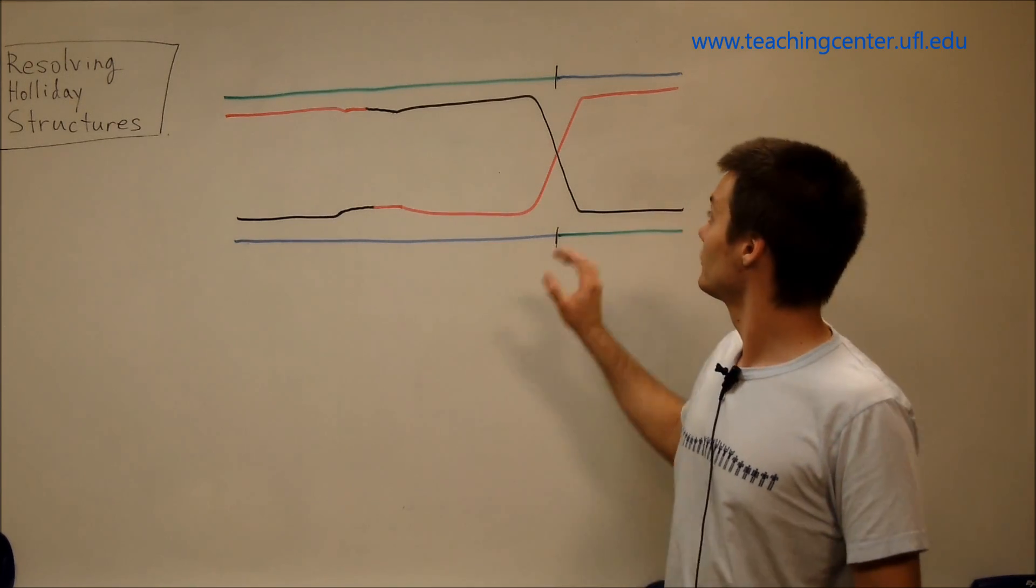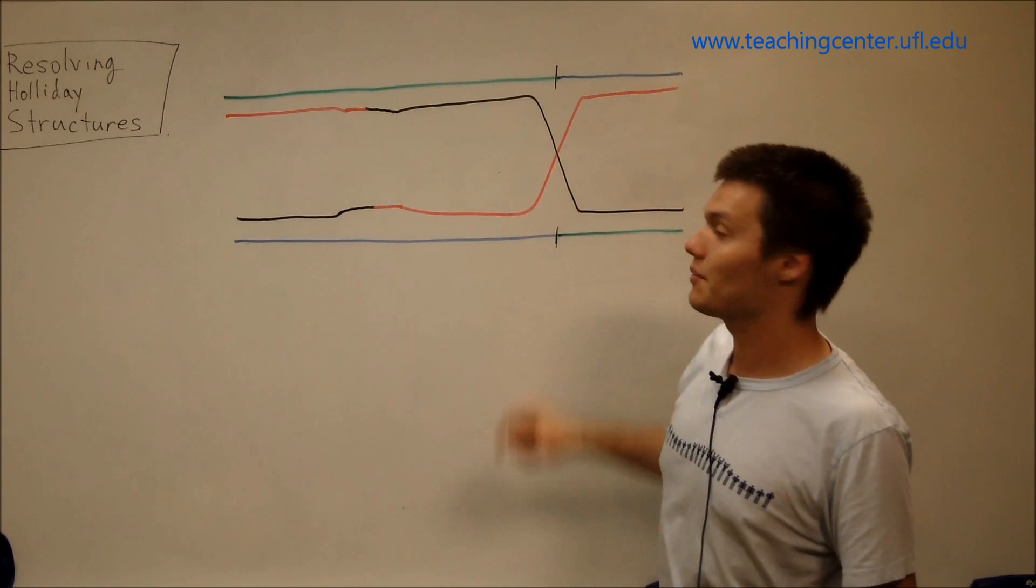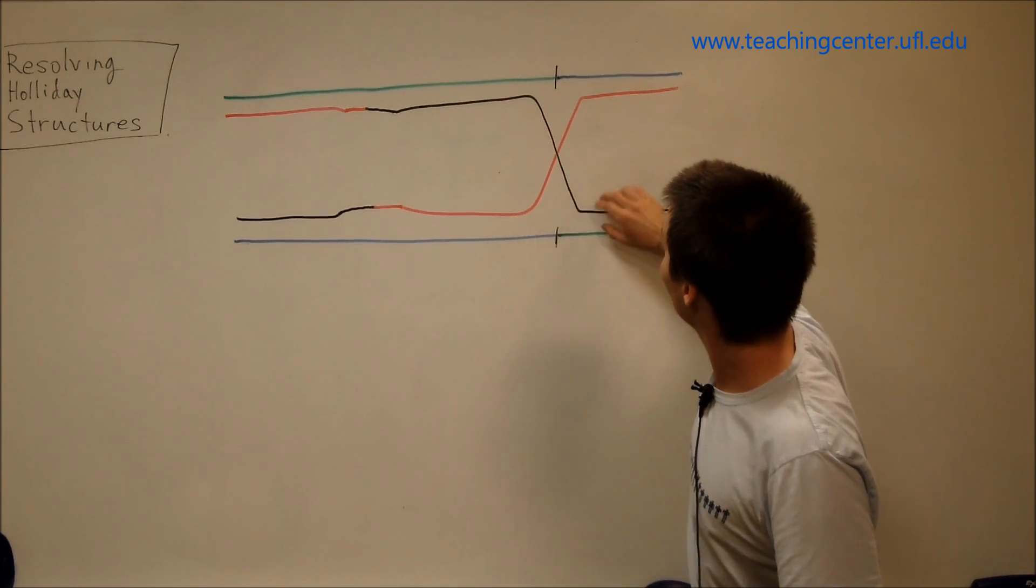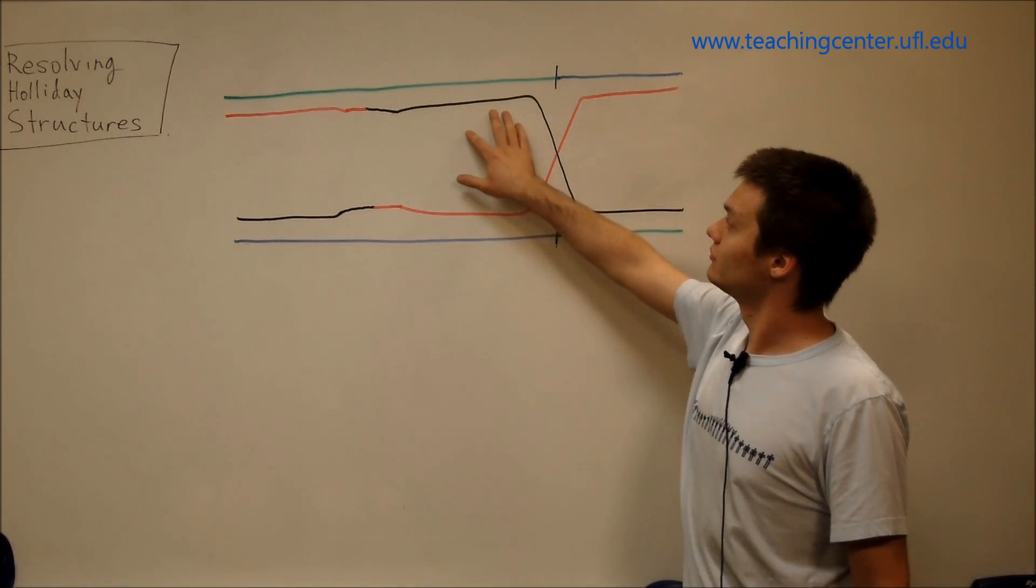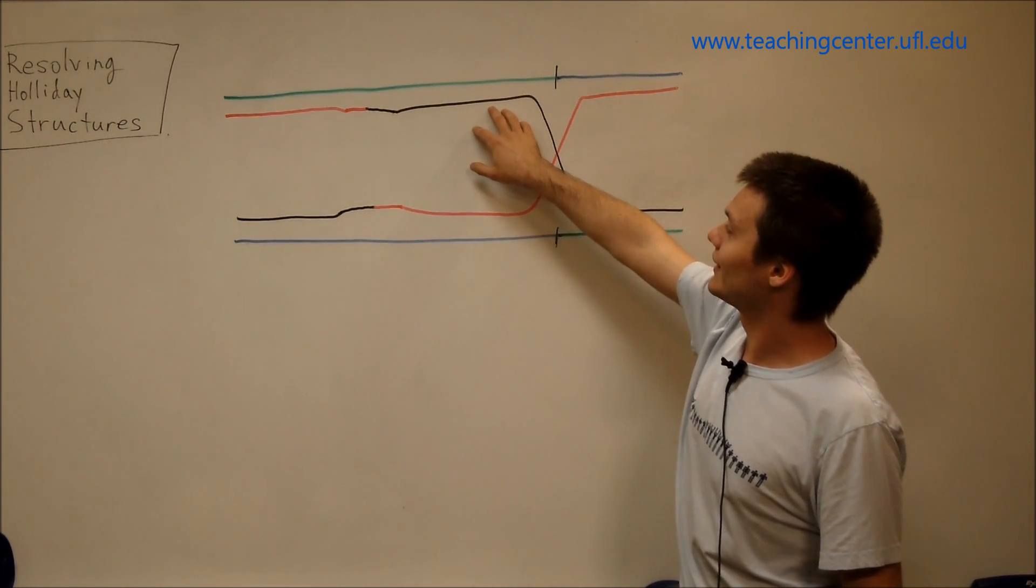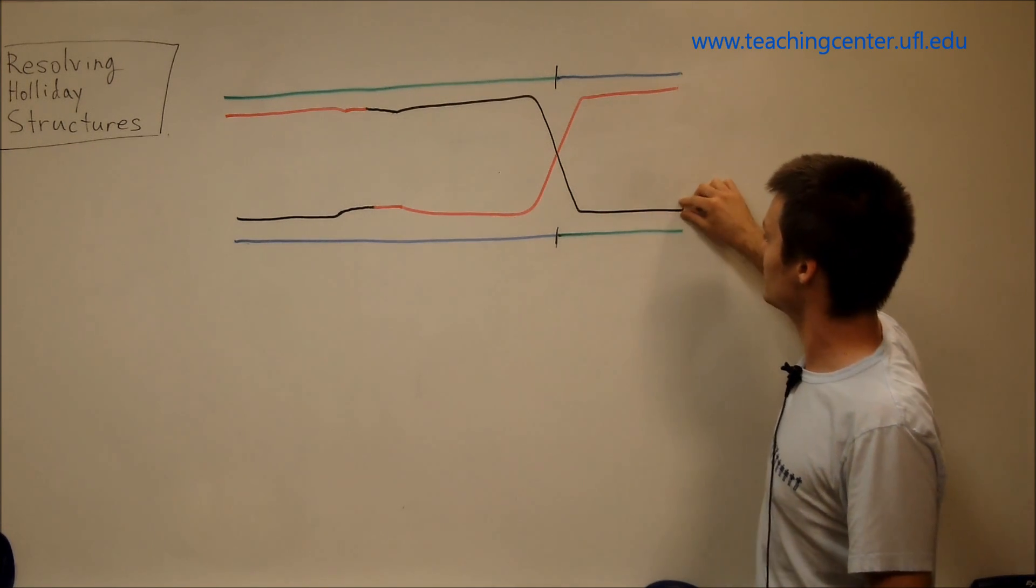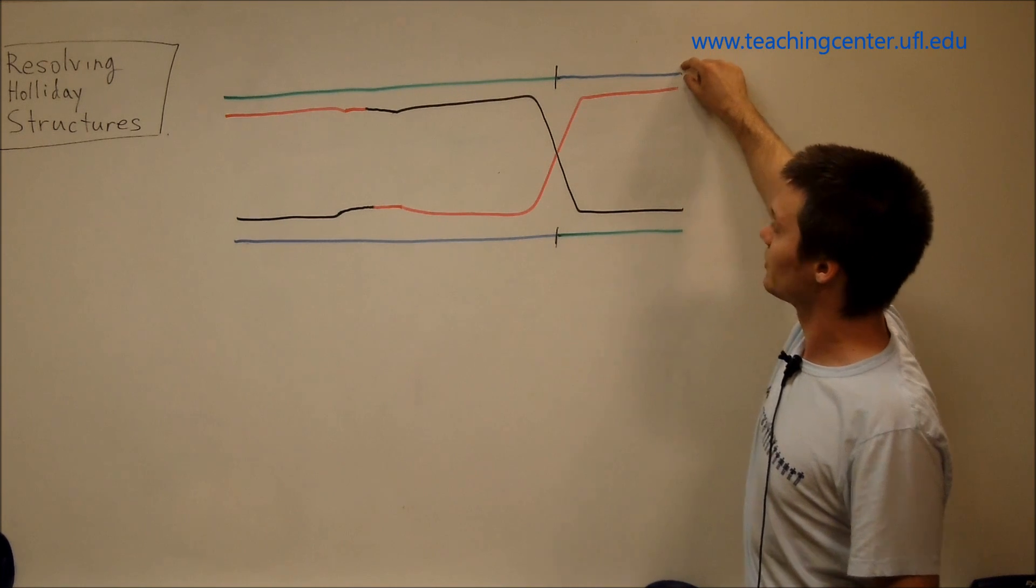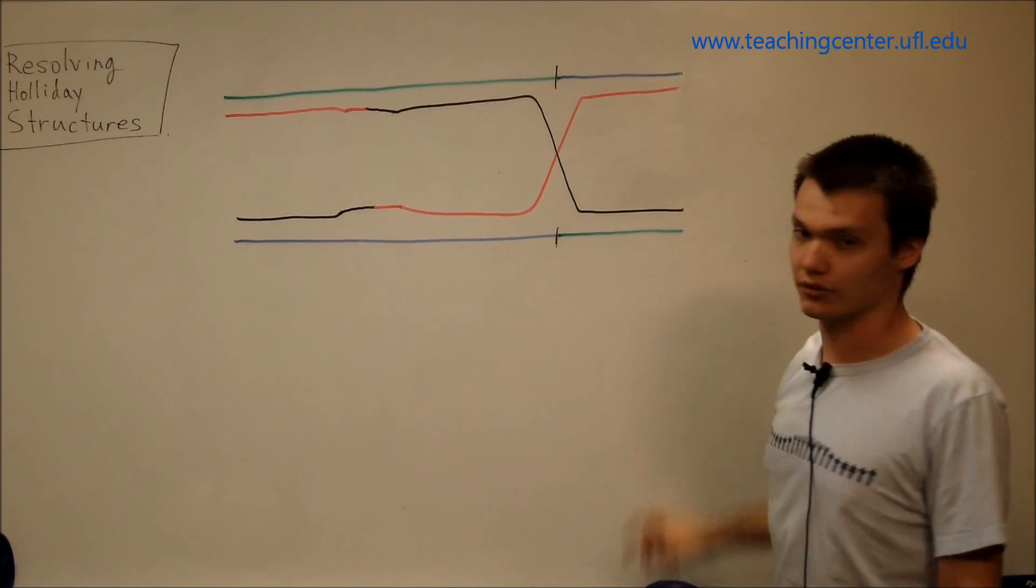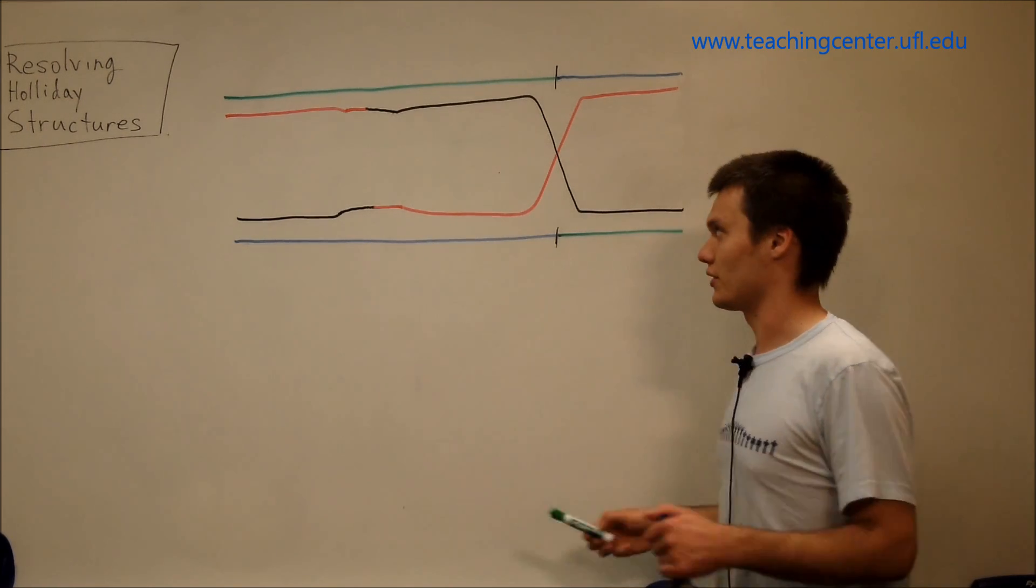And so, these two strands that are sort of intersecting or overlapping each other, they're actually going to go ahead and sort of come back to where I guess you can say they should be. Or this strand is going to come back up here, and this strand is going to come down over here. So let's draw that.